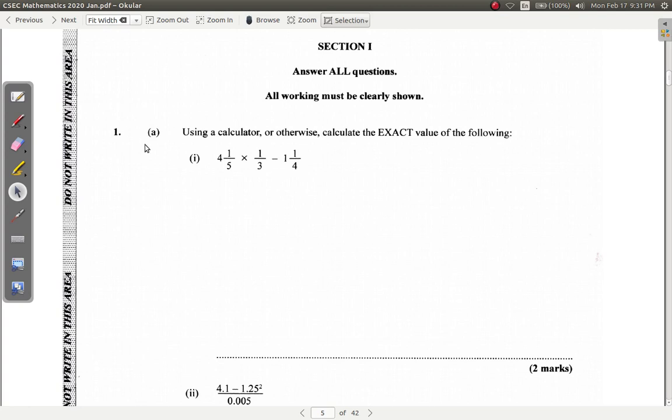Question 1 here. It says, using a calculator or otherwise, calculate the exact, and you see they put exact in full caps, full capital letters, exact value of the following. You have 4 and 1 fifth times 1 third minus 1 and a quarter. Alright, I've already copied it here.